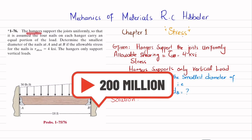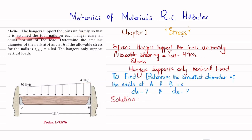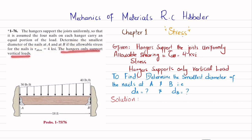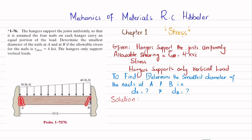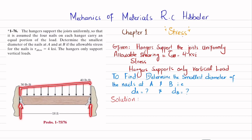The statement is: the hanger supports the joist uniformly so that the 4 nails on each hanger carry an equal portion of the load. Determine the smallest diameter of nails at A and B if the allowable shear stress for the nail is 4 KSI. The hanger only supports the vertical load. You can see this is the joist and these are hangers at A and B. In this hanger we have 4 nails on each hanger — 2 on this side and 2 on the other side. The loading on this joist is shown, and you have to determine the diameter of these nails. The allowable shear stress is given as 4 KSI.